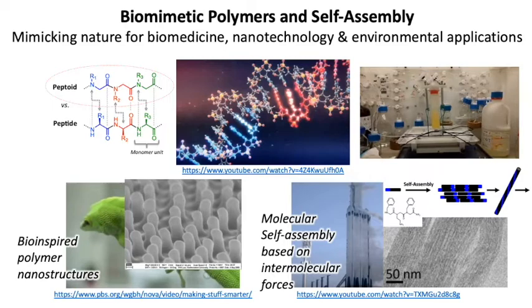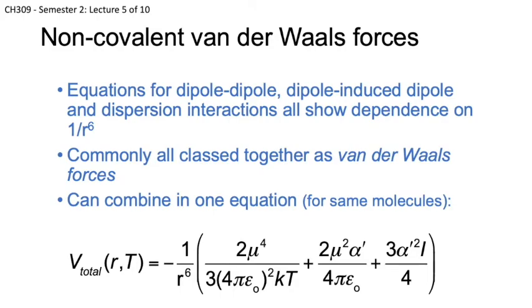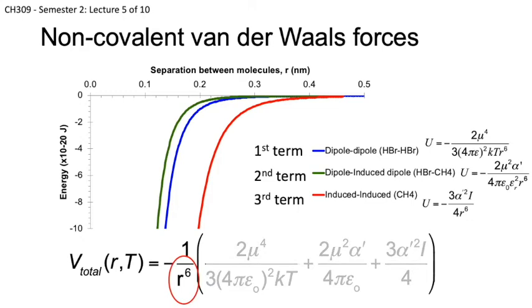Like other physical chemistry classes, my third year CH309 does contain some equations, but these are not so bad once you realize that the important things are the trends, and you can break down equations into simple parts. Moreover, the trends can be understood by identifying key variables, like the separation between molecules here, indicated by the letter R. It is realizing how key variables control such trends that are important in research.